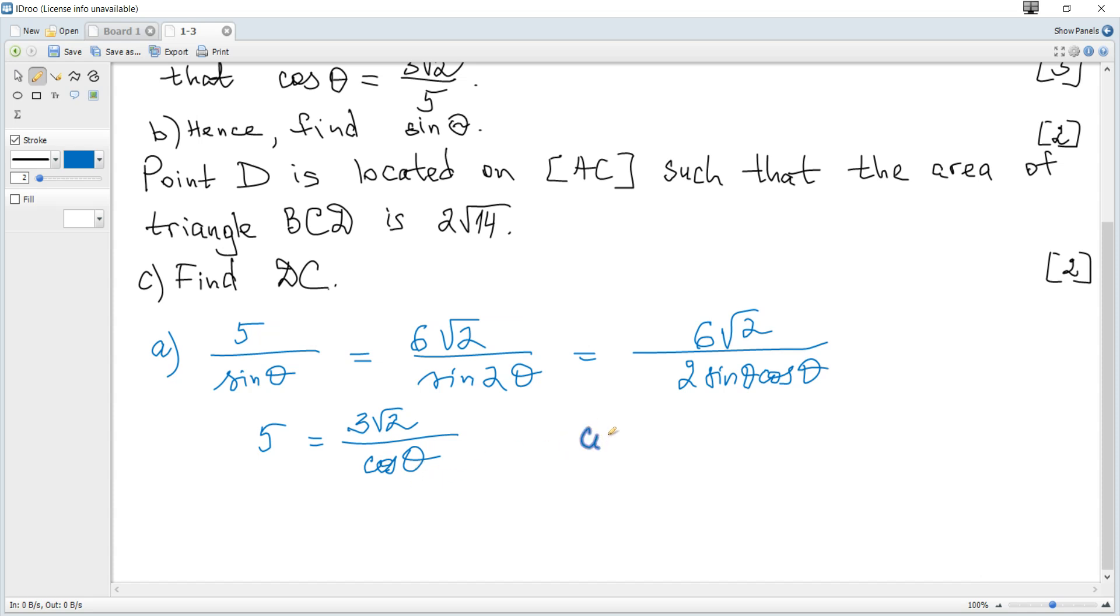Finally we get that cosine moves to the left up and the 5 moves to the right down, and it becomes cosine of theta is 3 times root 2 over 5, as required.